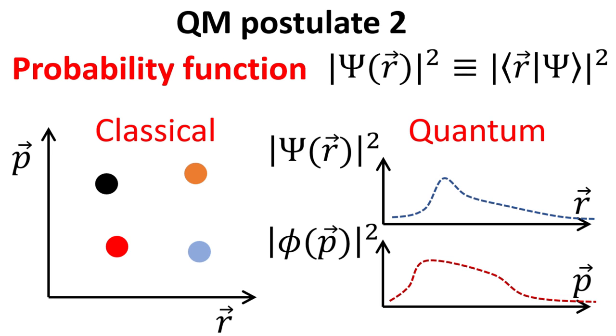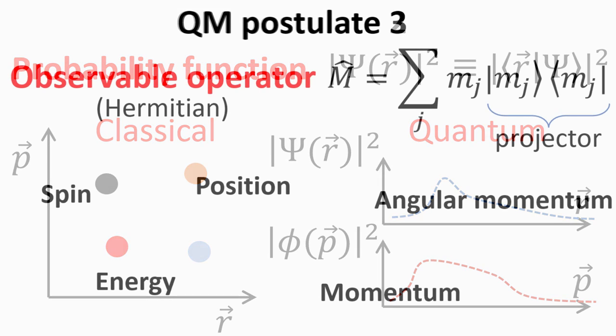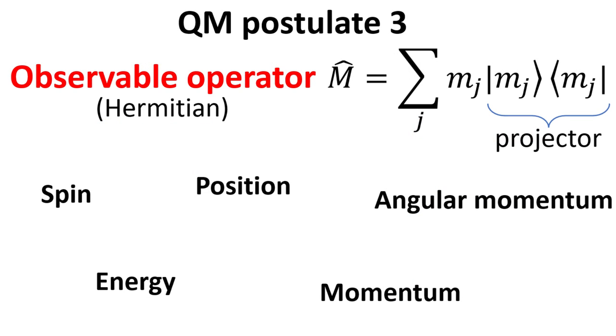The next postulate states that there is a Hermitian operator corresponding to each physical observable of the particle. As we previously reviewed in the video on linear algebra, a Hermitian operator can be spectrally decomposed in terms of its real eigenvalues m_j and projection operators, or projectors, in terms of kets and bras as follows. Commonly known observables include the particle spin, position, energy, momentum, and angular momentum, among many others.